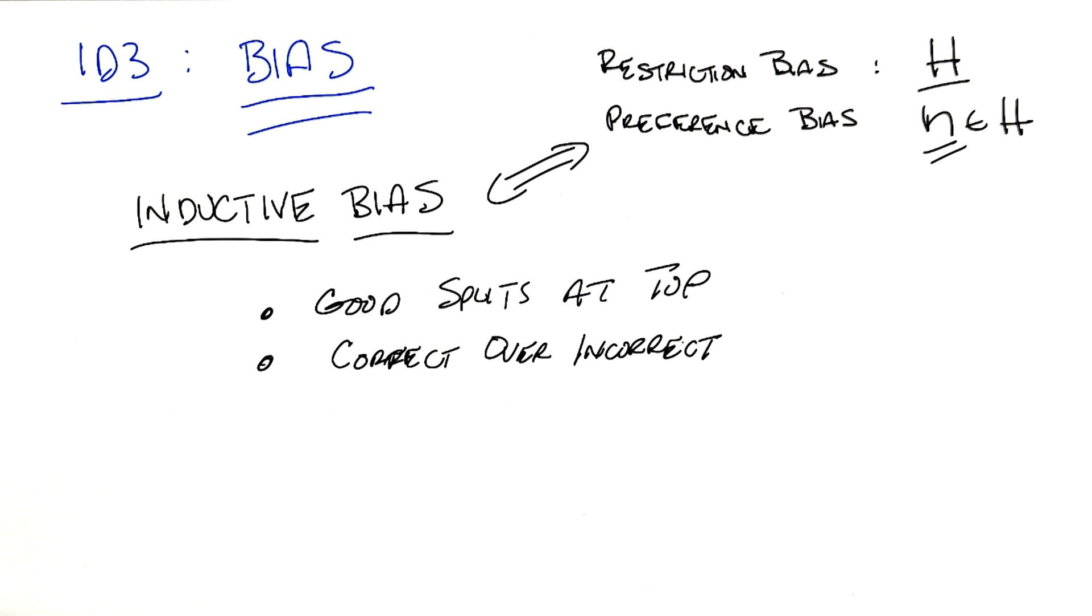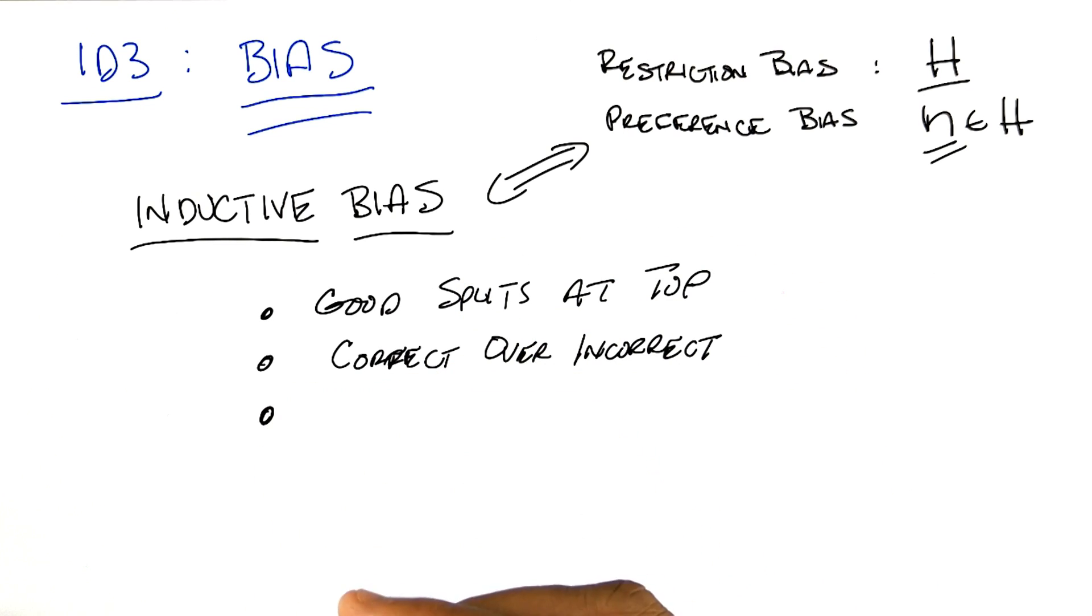So those are really the two main things that are the inductive bias for ID3. Although, when you put those two together, and particularly when you look at the first one, there's sort of a third one that comes out as well.